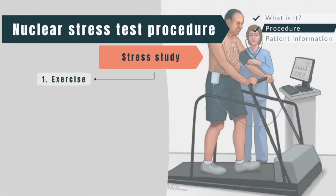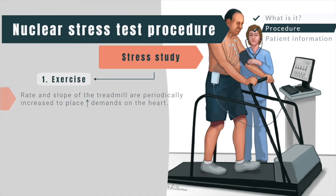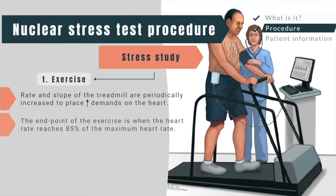Exercise stress testing is typically done on a treadmill but can also be done with a bicycle. Treadmill testing uses a protocol in which the rate and slope of the device are periodically increased to place increasing demands on the heart. The endpoint of the exercise is when the heart rate reaches a predefined level, typically 85% of the maximum heart rate. The tracer is then injected and exercise is continued for an additional one minute.